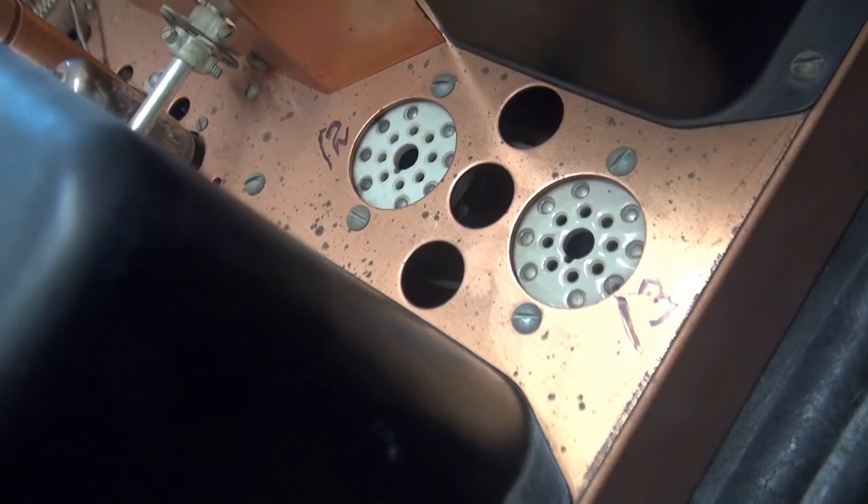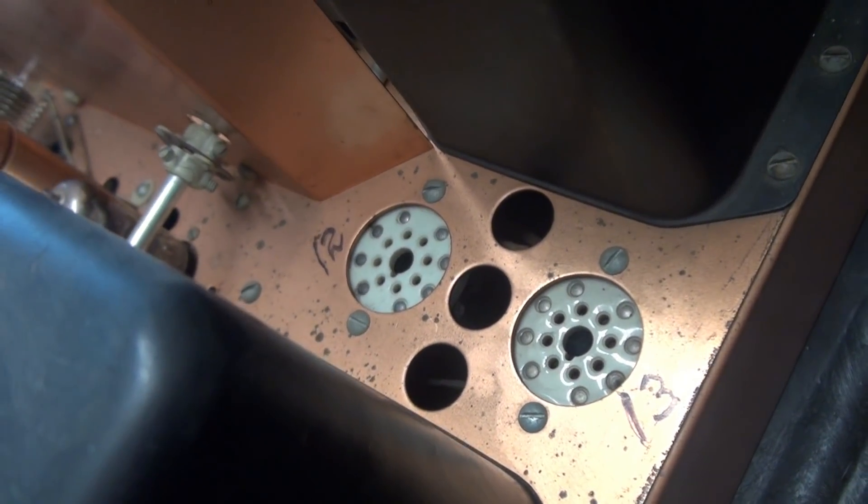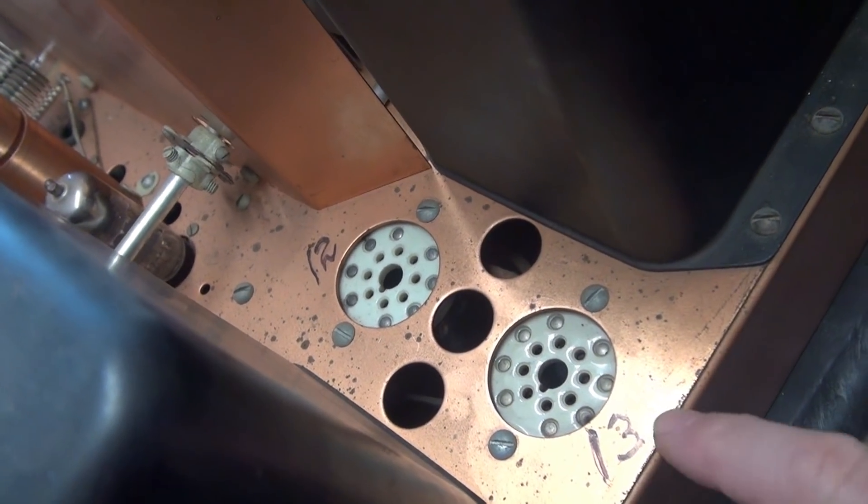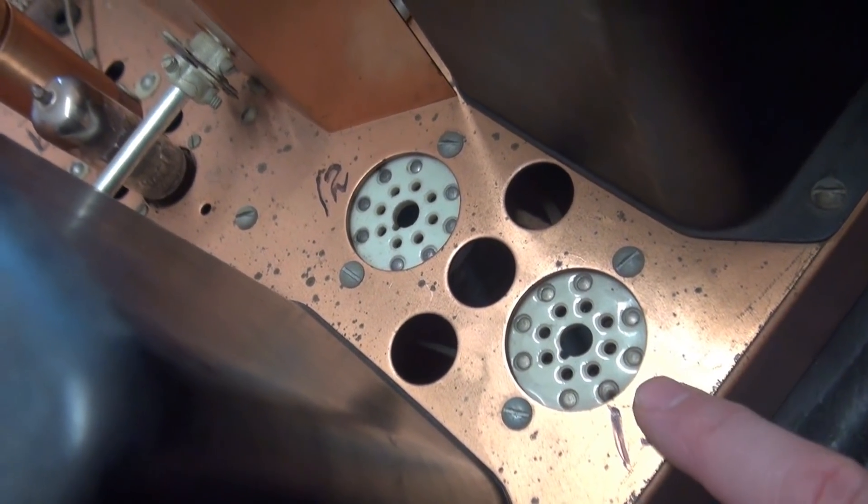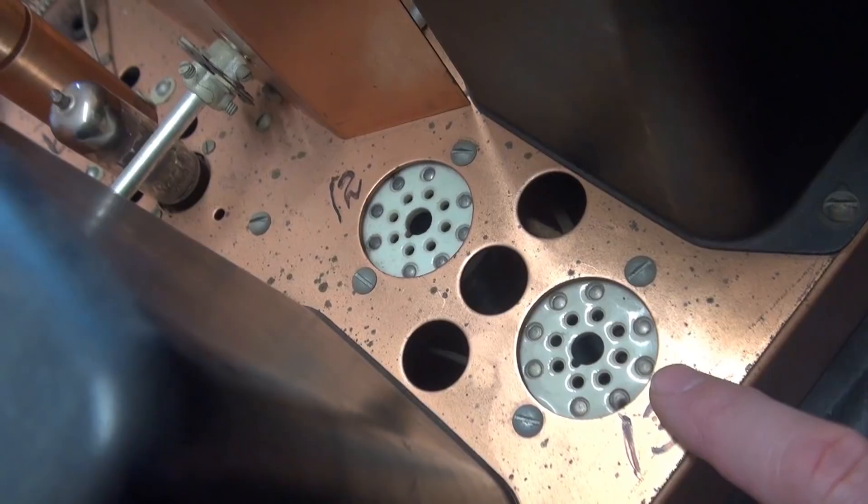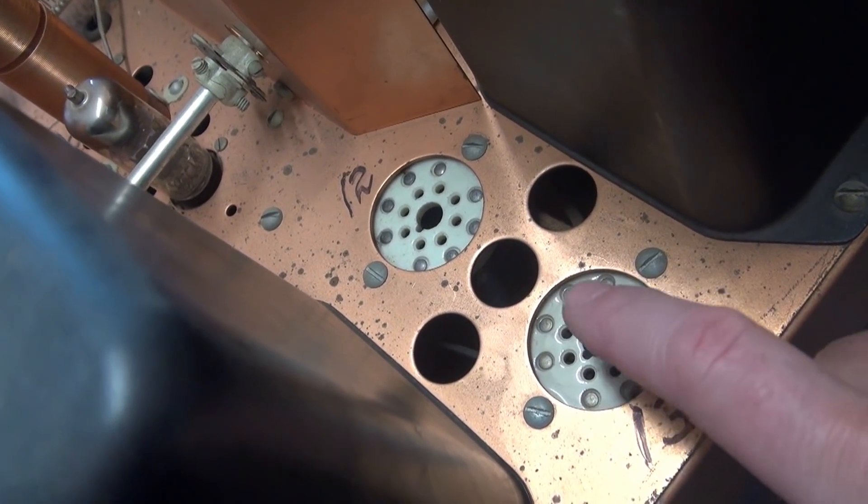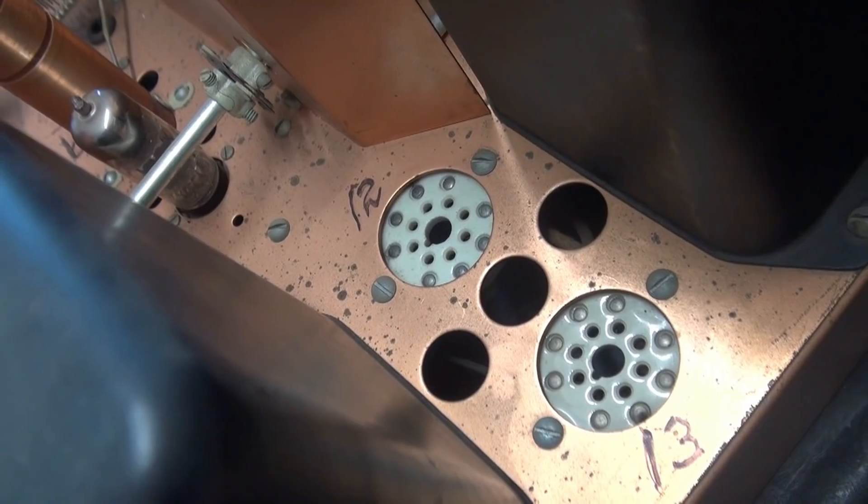So after evaluating this issue, I came up with a pretty easy solution. Instead of trying to clean the terminal and hope that it won't arc over again, I decided the best approach is to put an insulator between the socket and the chassis.